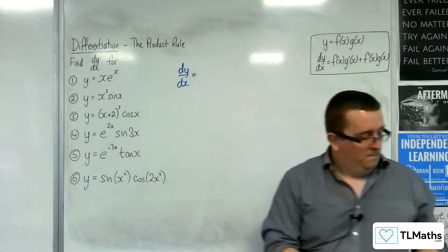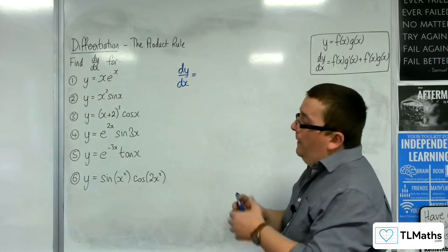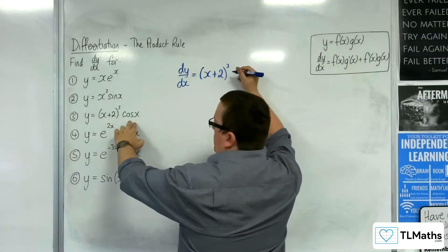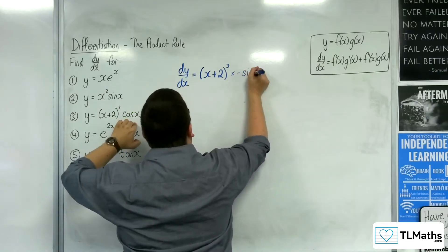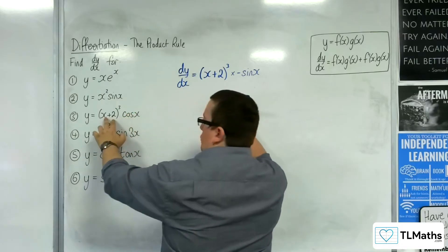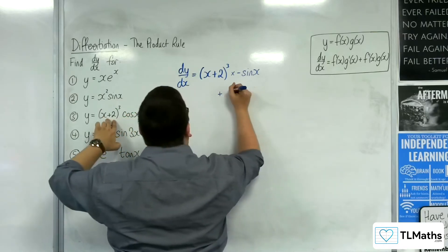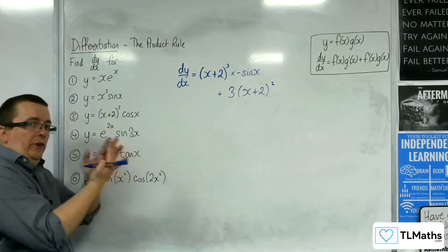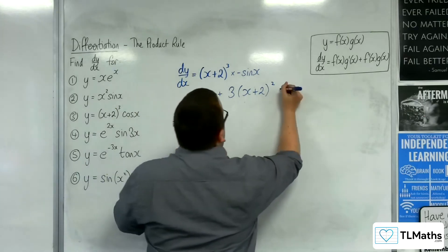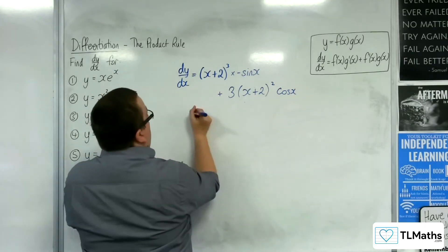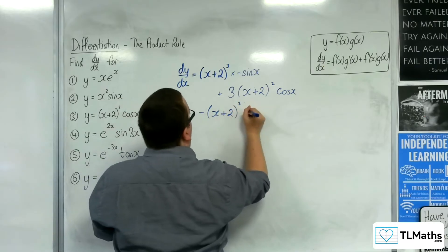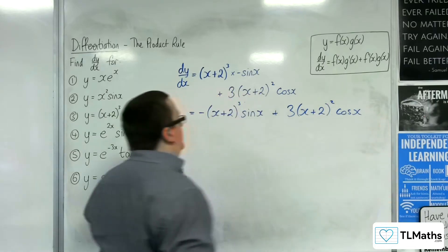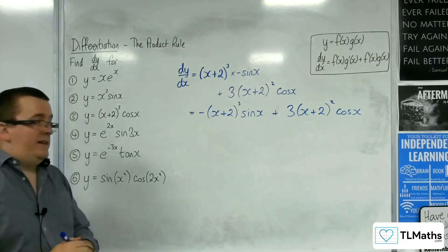Let's try number three. We've got x plus 2 cubed, cosine x. So, we've got the first — x plus 2 cubed — times by the derivative of cosine x, which is minus sine x. Plus the second times the derivative of the first. Now, the derivative of the first, using the chain rule, will be 3 lots of x plus 2 squared — the 3 comes down at the front, the derivative of what's inside comes outside, which is just 1, and I've taken 1 from the power. And that's cosine x. So, let's tidy this up: negative x plus 2 cubed sine x, plus 3 x plus 2 squared cosine x. So that's dy by dx for number three.